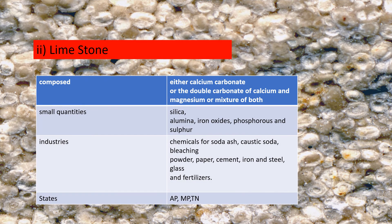Limestone is a non-metallic mineral composed of calcium and calcium magnesium, with small quantities of silica, alumina, iron oxide, phosphorus, and sulphur. It is used in chemicals such as soda ash, caustic soda, and bleaching powder, as well as in paper, cement, iron, steel, glass, and fertilizers. Major producing states are Andhra Pradesh, Madhya Pradesh, and Tamil Nadu.